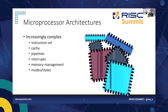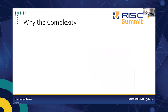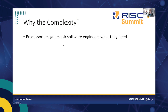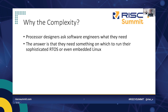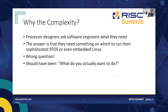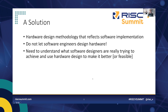We have clever people who build these systems, which is great. But why this complexity? One reason is that processor designers ask software engineers what they need. The answer they get is that engineers need something to run their sophisticated real-time operating system or even embedded Linux. But that was the wrong question. The right question is: what do you actually want to do? Software developers have a preconception of what they'll run their software on, so that's what they respond with. What they really want to do is run their multi-threaded model using their RTOS.